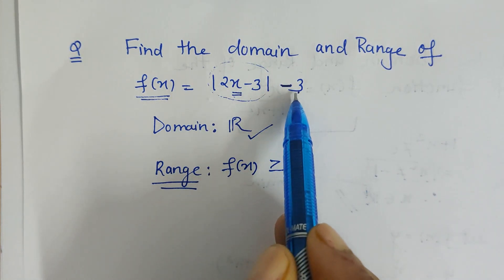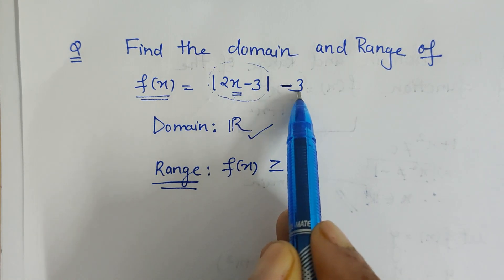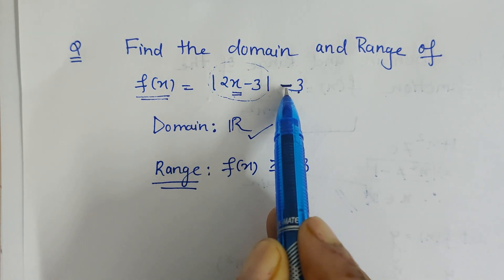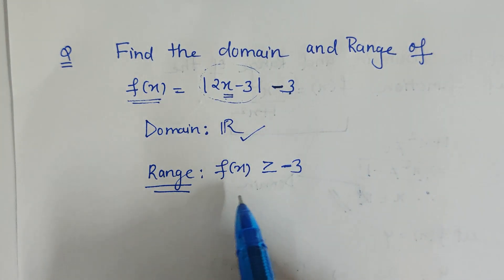When we subtract 3 from something positive, we will always get a number which is greater than -3.